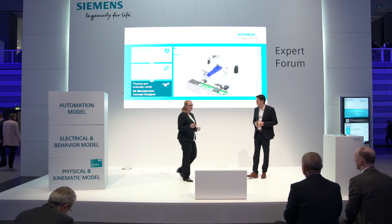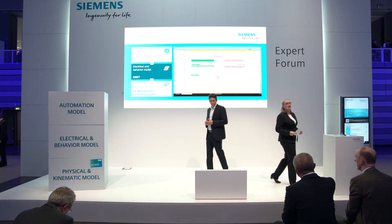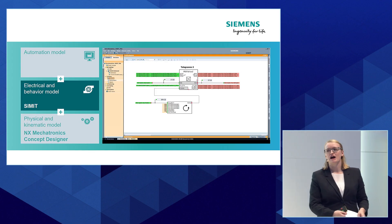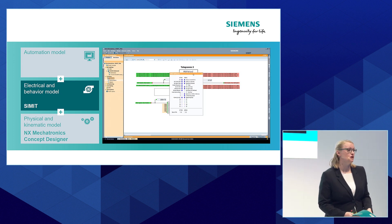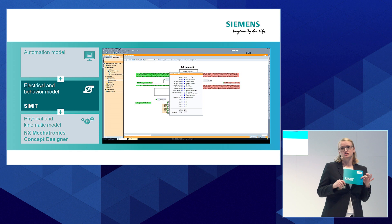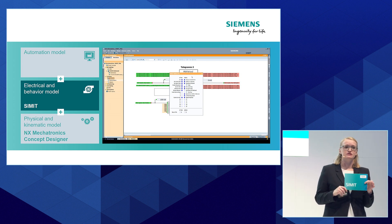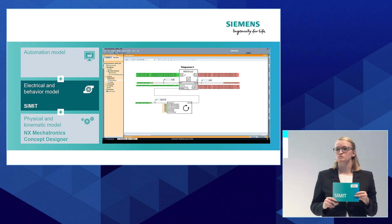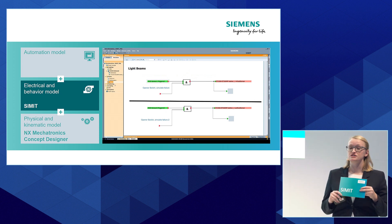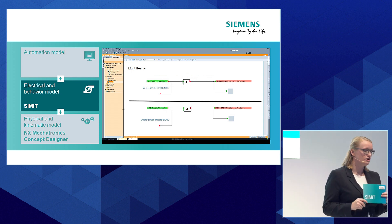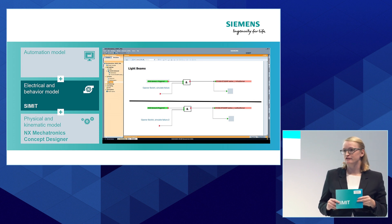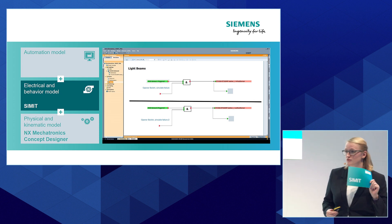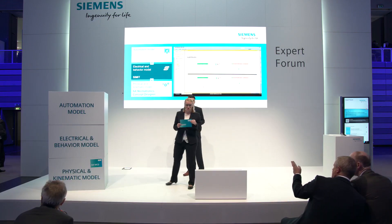In the second step, we need a behavior model of our machine. The behavior model contains the behavior of active components like drives or other periphery systems. In our case, we are using the simulation software SIMIT to realize the behavior model. In SIMIT, we can virtually map all relevant active processes. In a simple case, this could be the communication behavior of a drive via the PROFIDRIVE telegram. But also complex cases like the pressure behavior of a hydraulic system can be simulated with SIMIT. To say it in other words, with SIMIT we bring our machine to life.